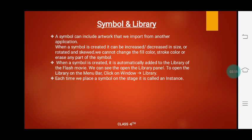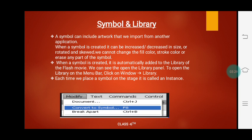We can open the library panel. To open the library panel, on the menu bar click on Window and just select Library. You will see the list of symbols created. Whatever symbol we have created, it gets stored in the library. Each time we place a symbol on the stage, it is called an instance. Whatever symbol we have created, when we are using it on the stage, an instance is created. An instance is nothing but a copy of that object.